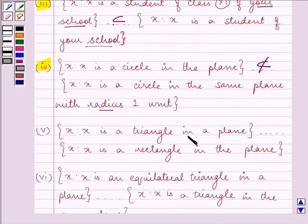X such that X is a triangle in a plane, and X such that X is a rectangle. Definitely it is not a subset again.